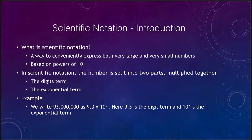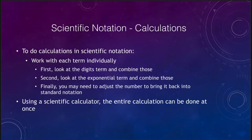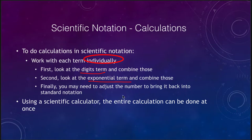Let's look at how we go about doing some calculations with these numbers. We want to work with each term individually — not all at once. First we combine the digits terms, then we combine the exponential terms, and finally we bring it back into standard notation, meaning there is just one non-zero digit to the left of the decimal point.